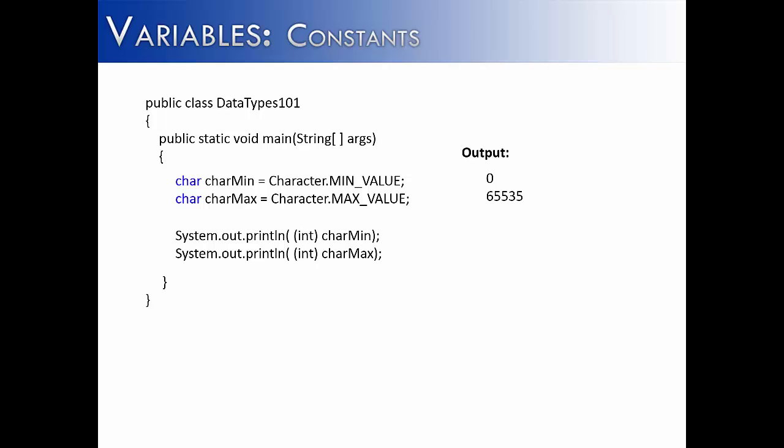And so instead of showing you their character values, we've just shown you their numeric equivalent being 0 and 65,535. If you're familiar with how the character data type works with Unicode and ASCII, it would make a lot of sense that there's a numeric equivalent to its max and min.